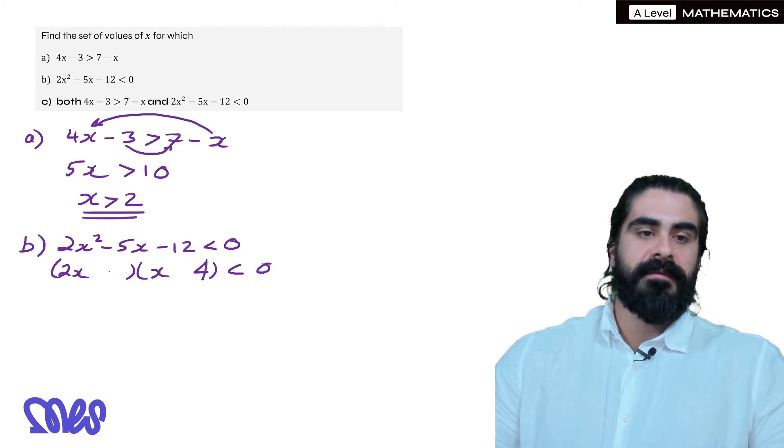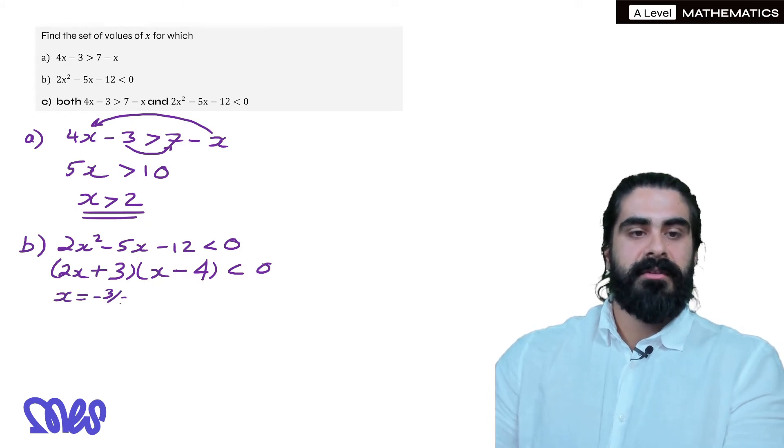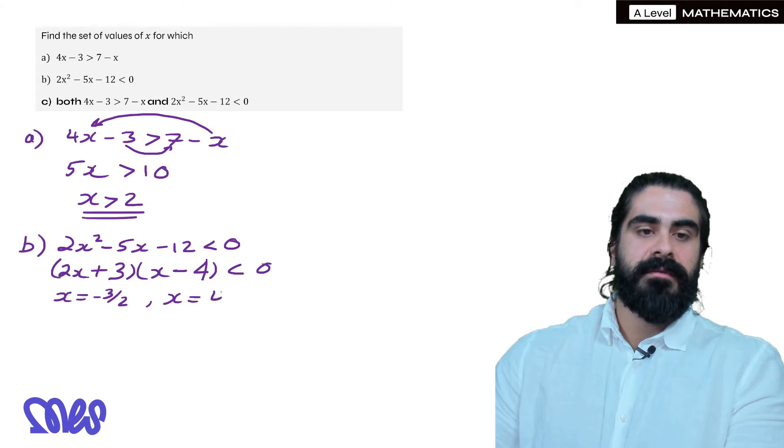I'm going to put 4 in here because 4 cannot go in the first bracket because it's even. 2x times 4 is 8x and 3 times x is 3x. How do we make minus 5x? Then we need a minus 8x plus 3x. So our roots are x is minus 3 over 2 and x equals 4.